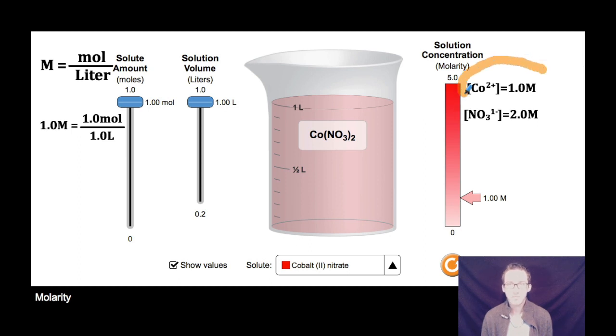This means I have a one molar concentration of the cobalt(II) ions, because for every one mole of cobalt(II) nitrate, there's one mole of cobalt ions. But the concentration of nitrate ions is two molar, because for every one mole of cobalt(II) nitrate that I dissolve into solution, I get two moles of nitrate ions. So this is two moles of nitrate ions in one liter of solution.